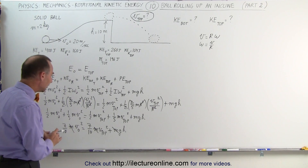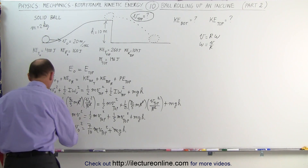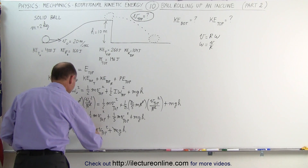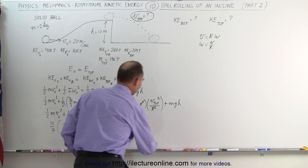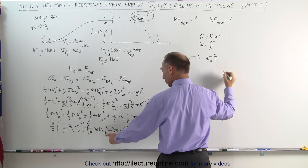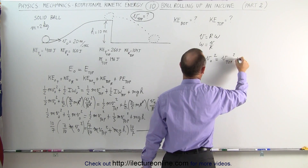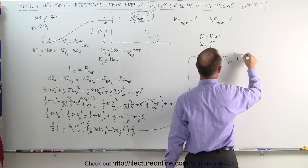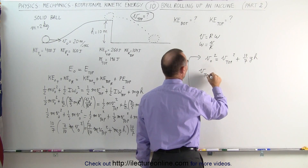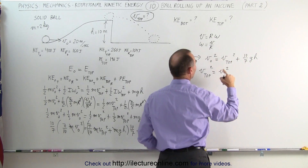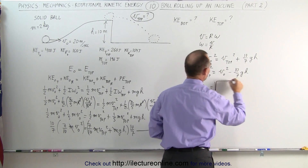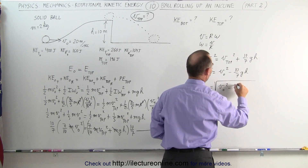To get rid of the seven-tenths, we multiply both sides of the equation by ten-sevenths. When we do that, we end up with v-initial squared equals v-top squared plus ten-sevenths times g times h. Finally, solving for v-top squared: v-top squared equals v-initial squared minus ten-sevenths times gh. And therefore v-top equals the square root of v-initial squared minus ten-sevenths times gh.